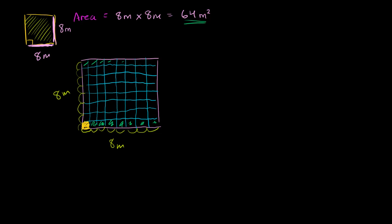Now, what happens if I were to ask you the perimeter of my square? The perimeter is the distance you need to go to go around the square. It's not measuring how much carpeting you need — it's measuring, for example, if you wanted to put a fence around your carpet, how much fencing you would need. So it would be the distance around: that distance, plus that distance, plus that distance, plus that distance.